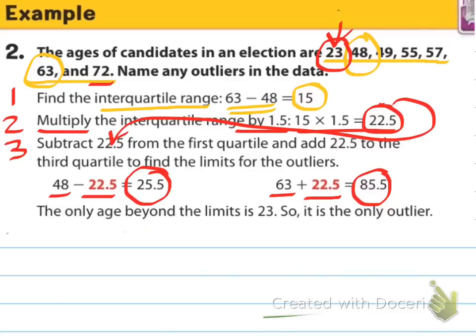There's not always an outlier, but if there's a big enough spread then something becomes an outlier. Common sense told me 23 would be an outlier — what 23-year-old is a candidate in an election? We've got 40-year-olds, 50-year-olds, a 60-year-old, and a 70-year-old, but no 30-year-olds — we skipped all the way down to 23. That's insane. He's just too young; he's an outright liar.